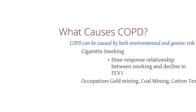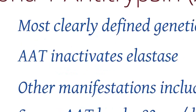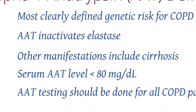Now let's take a look at some of the genetic risk factors. The number one genetic risk factor is alpha-1 antitrypsin deficiency. Alpha-1 antitrypsin deficiency results in decreased alpha-1 antitrypsin production, otherwise known as AAT. AAT naturally inactivates elastase, and elastase in our body breaks down lung tissues. So without this AAT, elastase can work uninhibited, resulting in destruction of the lung tissue.